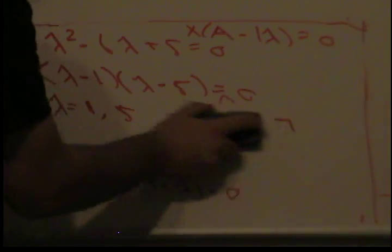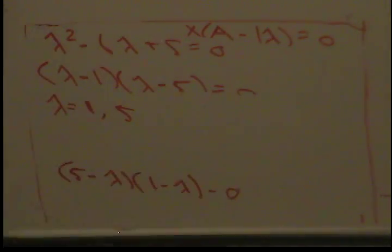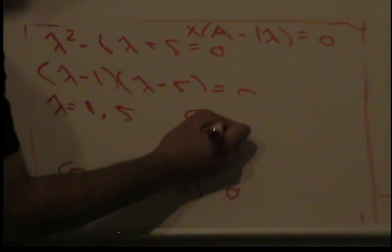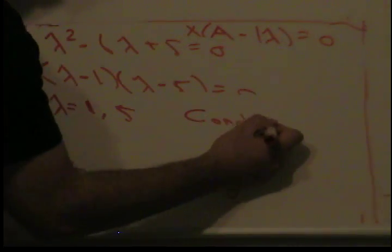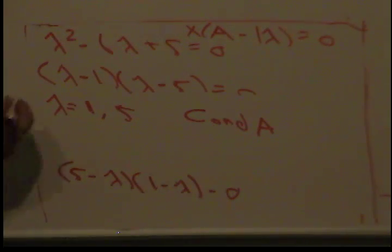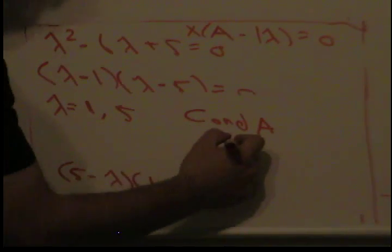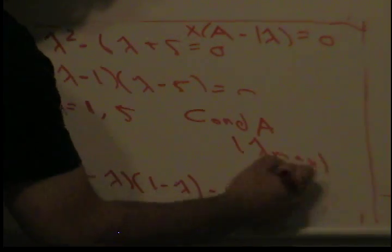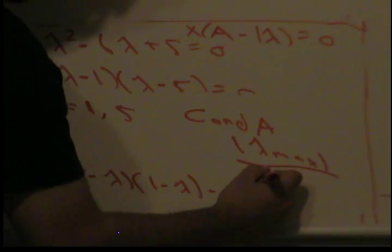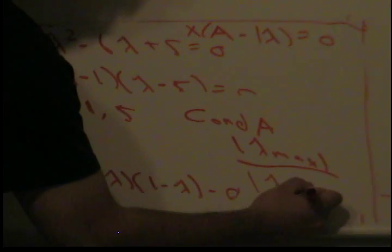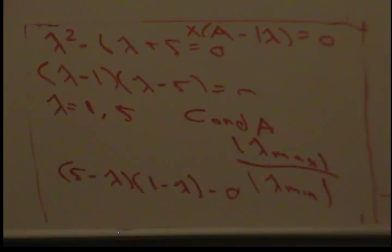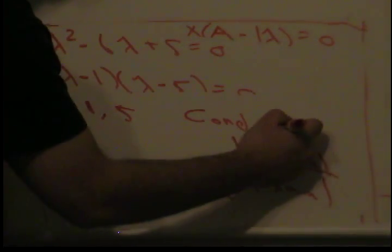Another kind of question they might ask you is to find the condition of A. That is simply just the absolute value of eigenmax over the absolute value of eigenmin. In our problem we got 5 and 1, so the condition is just 5.